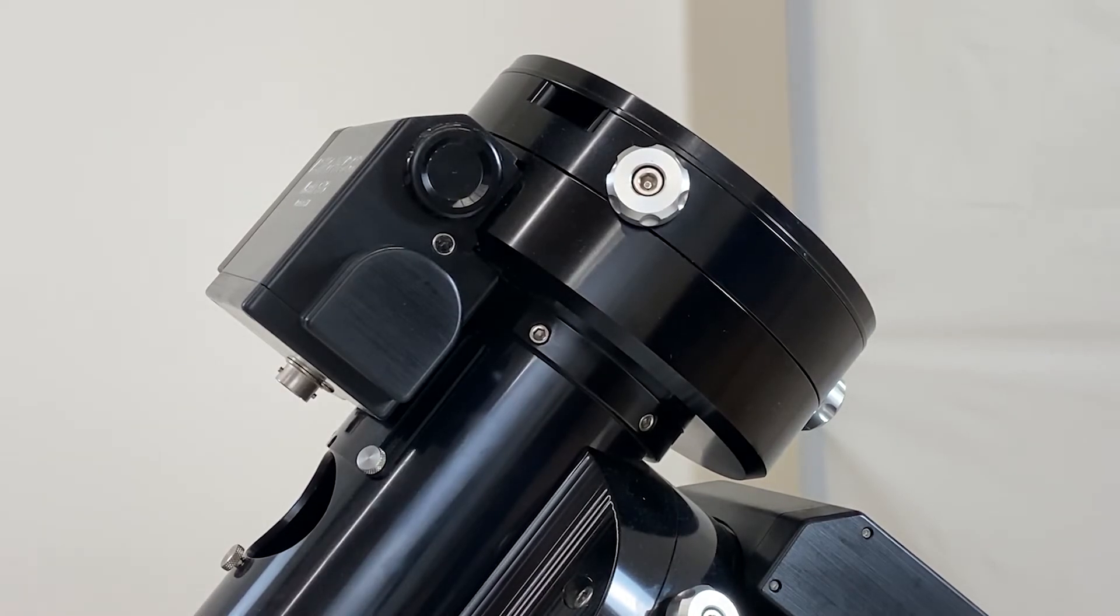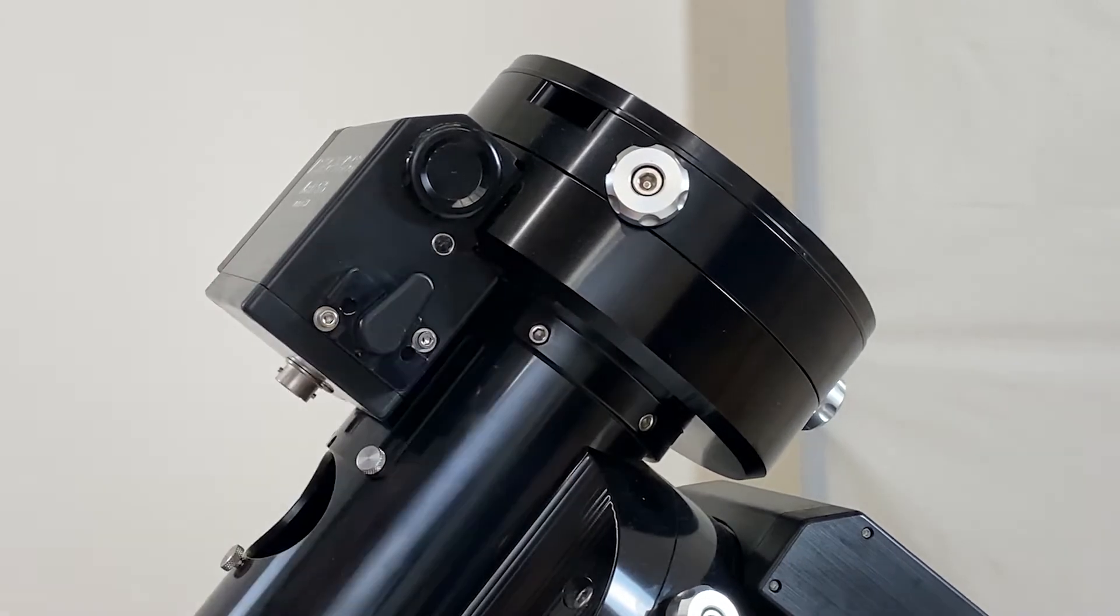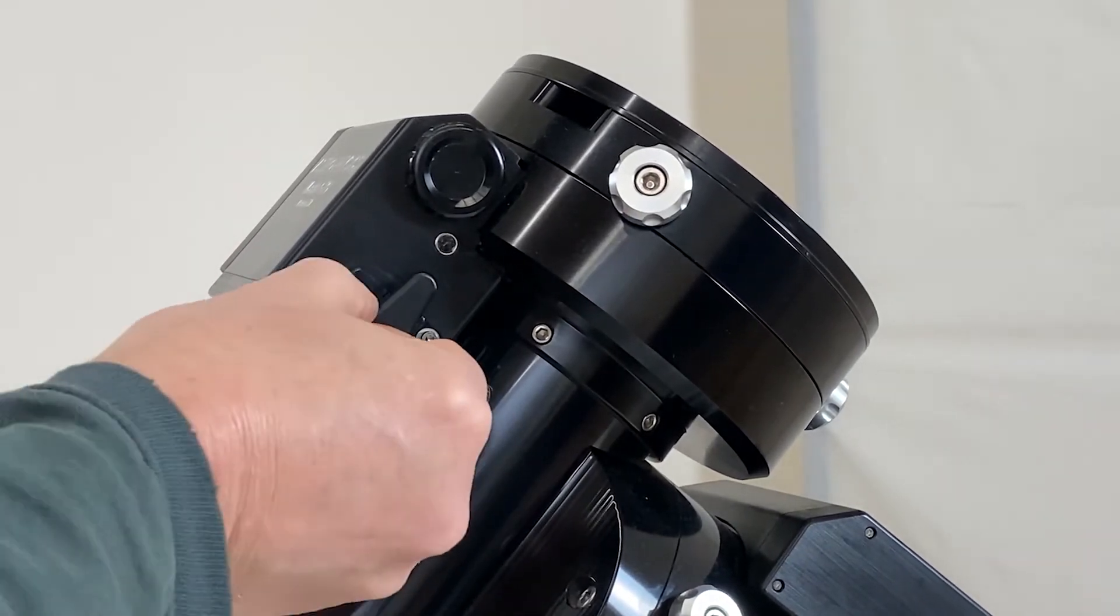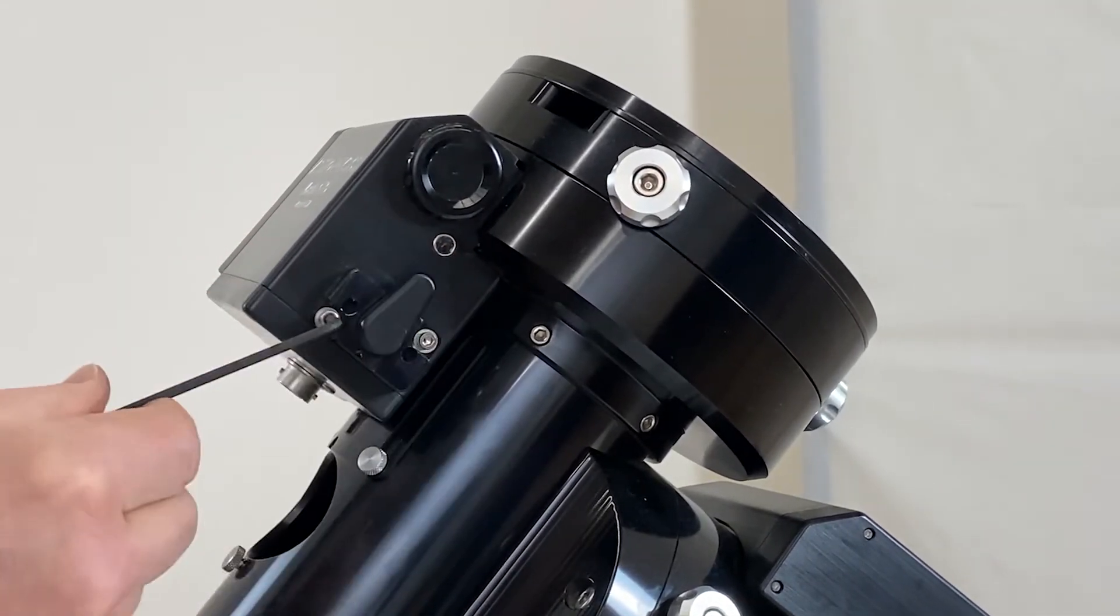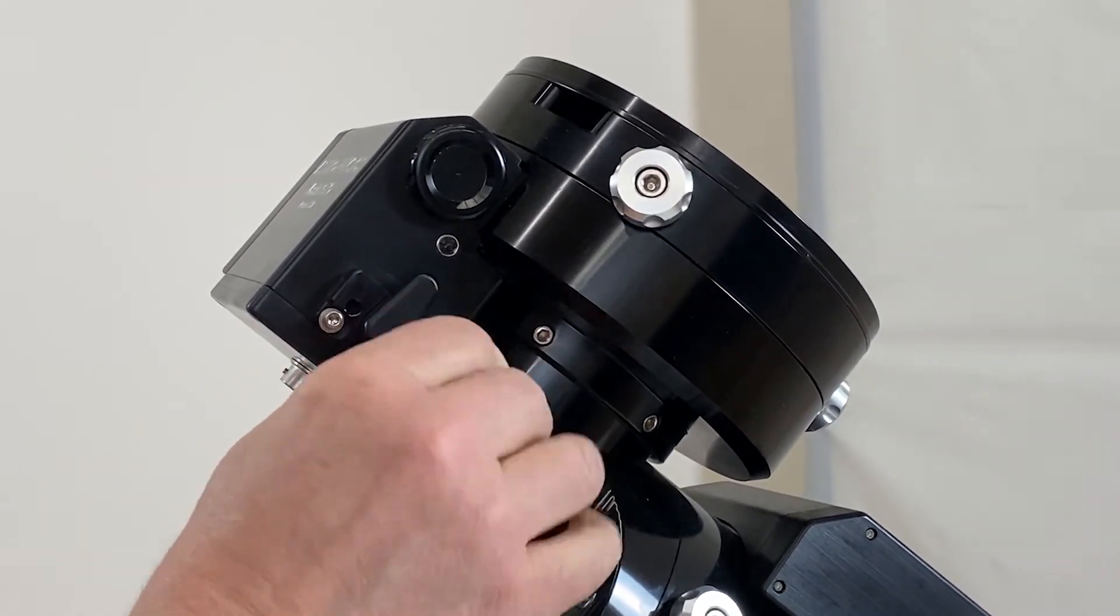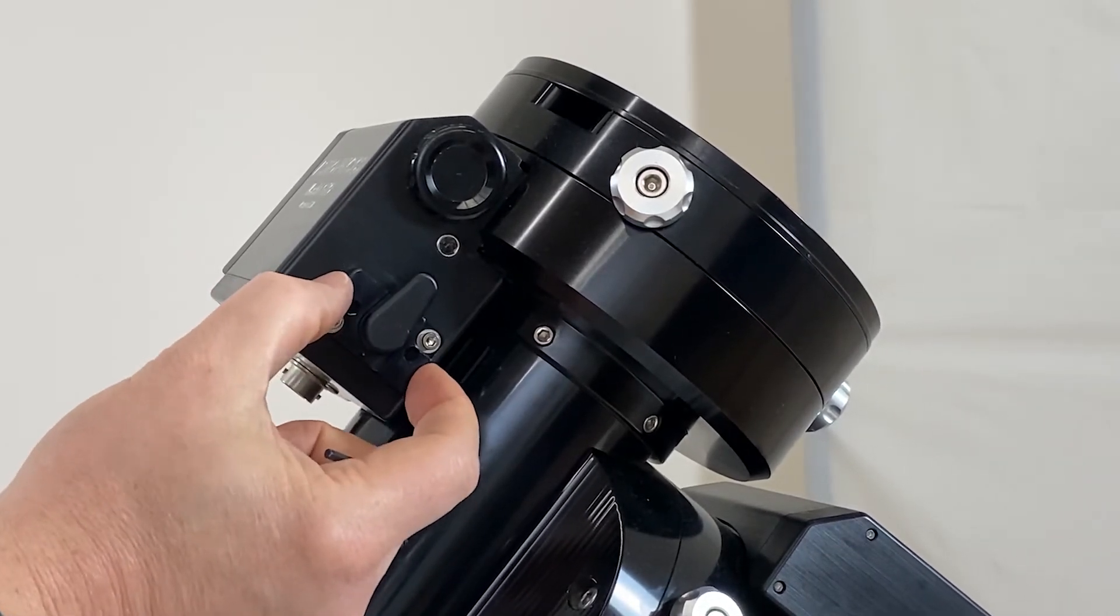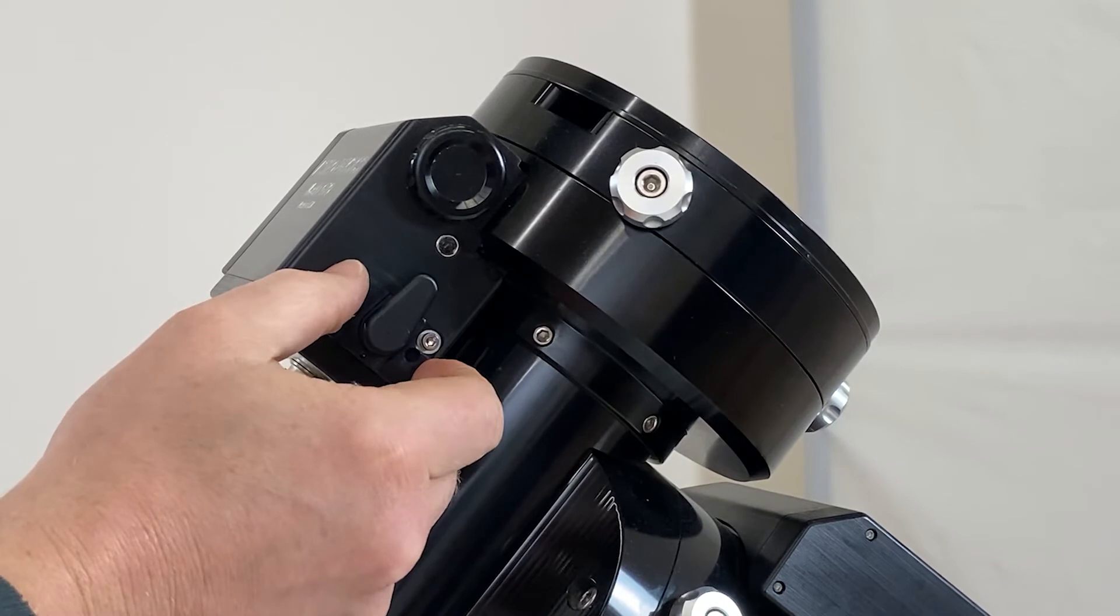Start by removing the Wormbox cam knob cover. It should just pop right off, like so. Then you'll loosen each screw about a half turn. You're only loosening the screws just enough so that when you push the cam adjuster back and forth, it moves freely.